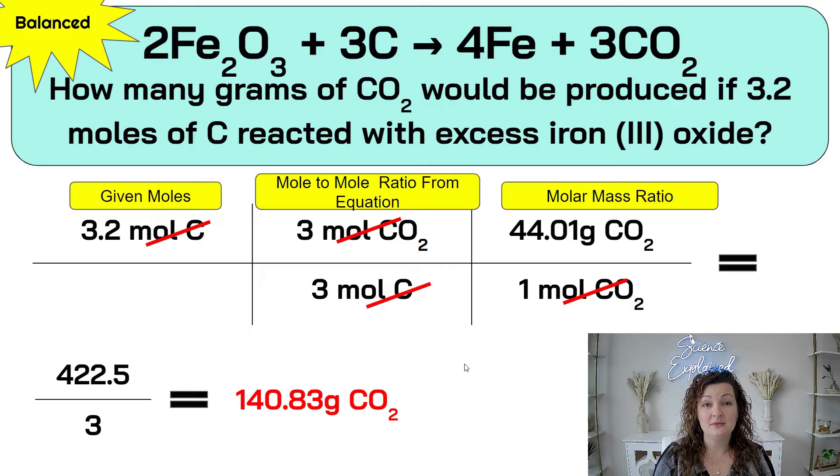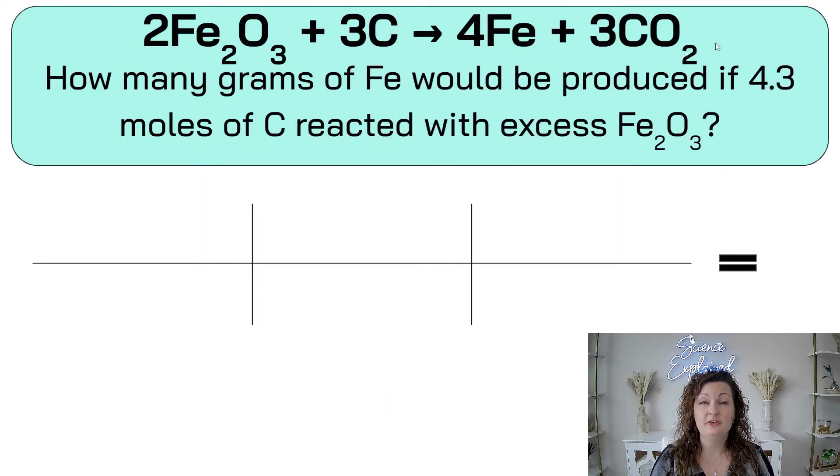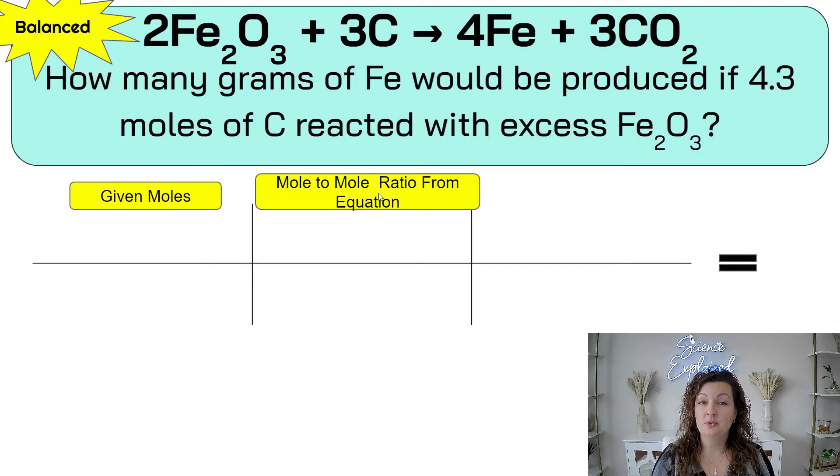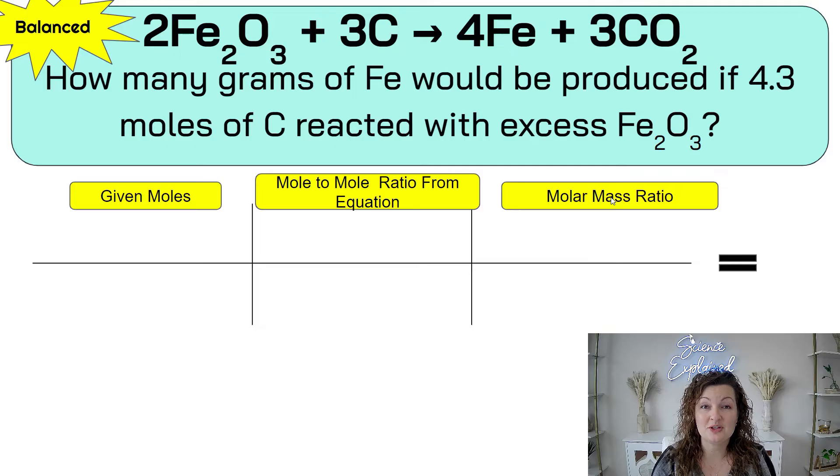Alright, let's try another one. So we're using our same chemical equation. We know it's balanced already. We don't have to worry about that. And this one says, how many grams of Fe would be produced if 4.3 moles of carbon reacted with an excess of Fe2O3? So we're going to set up our problem the same way, given moles, mole to mole ratio, and then molar mass ratio. Put in what you know, 4.3 moles of carbon. Diagonal down is going to be moles of carbon, and it's going to be from our balanced chemical equation. So three moles of carbon.